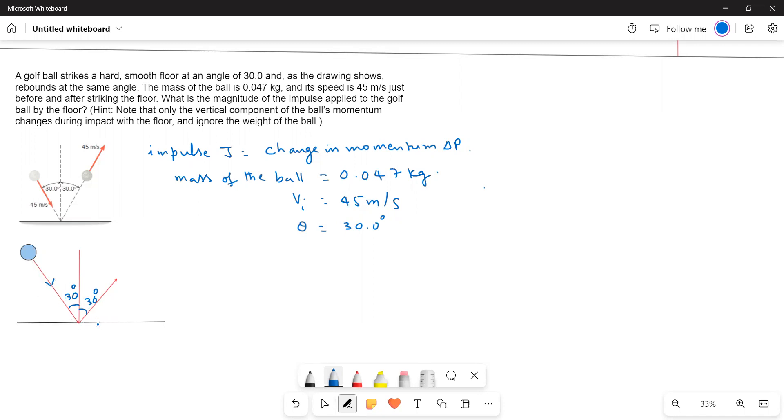We have to take the y-component of the momentum because it is striking the ground and going up. That means we have to consider change in y-component momentum. Now y-component means this is the angle 30 degrees, that is adjacent to side, therefore it will be cos component.